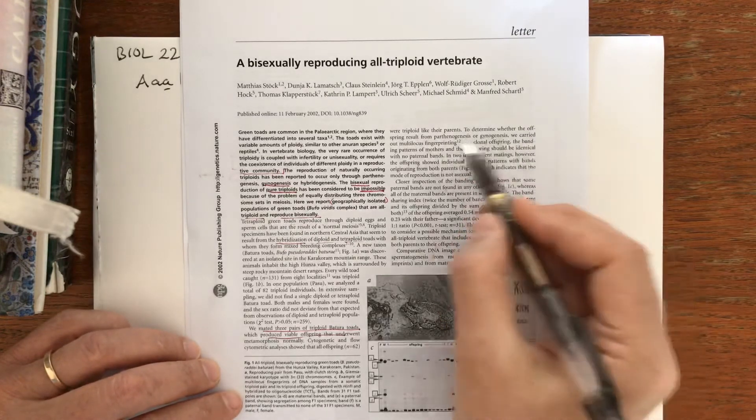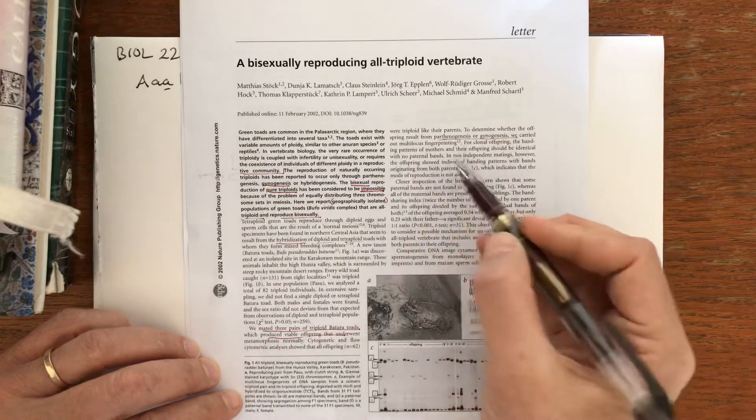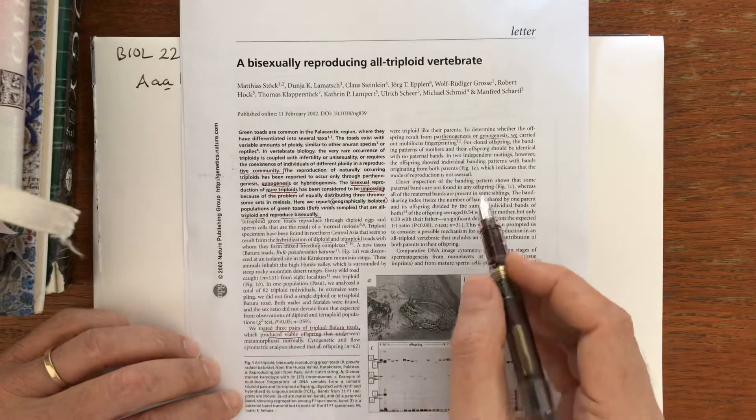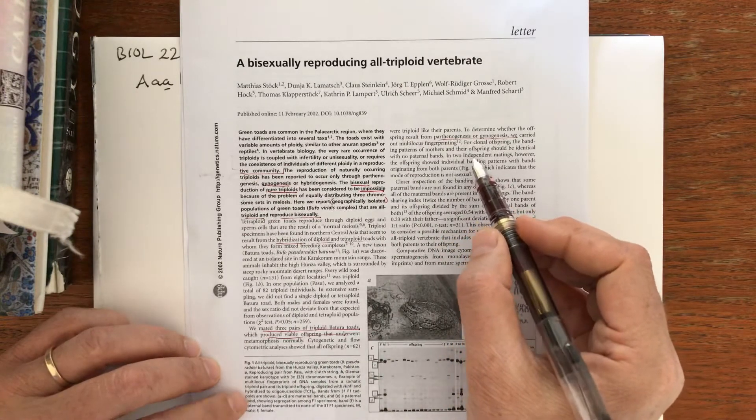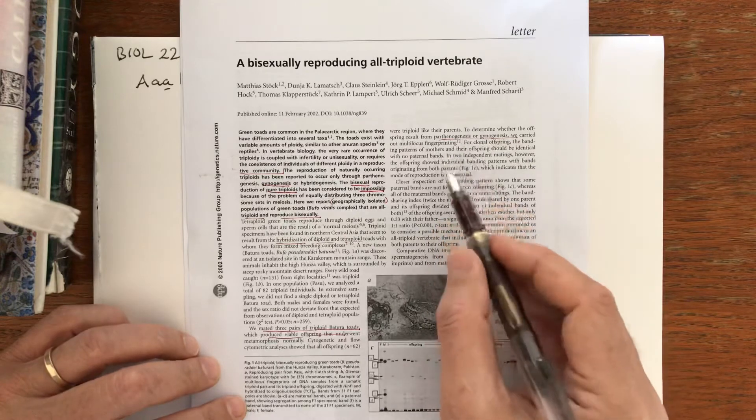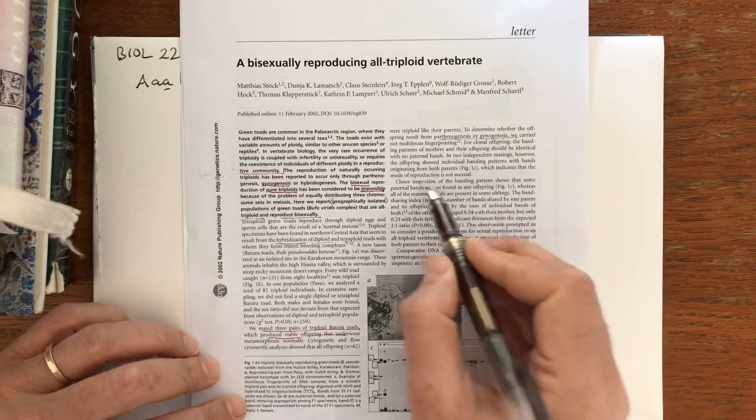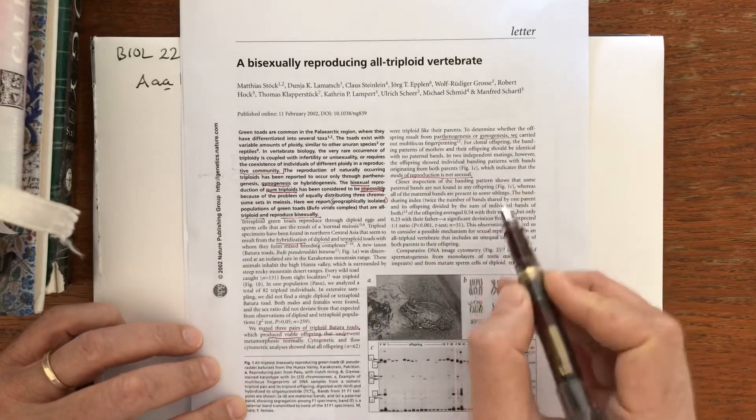To determine whether offspring were from parthenogenesis or gynogenesis, they carried out DNA fingerprinting to show that they have alleles both from the father and from the mother, from the male and the female parent. So the mode of reproduction is not asexual, not parthenogenesis or gynogenesis.